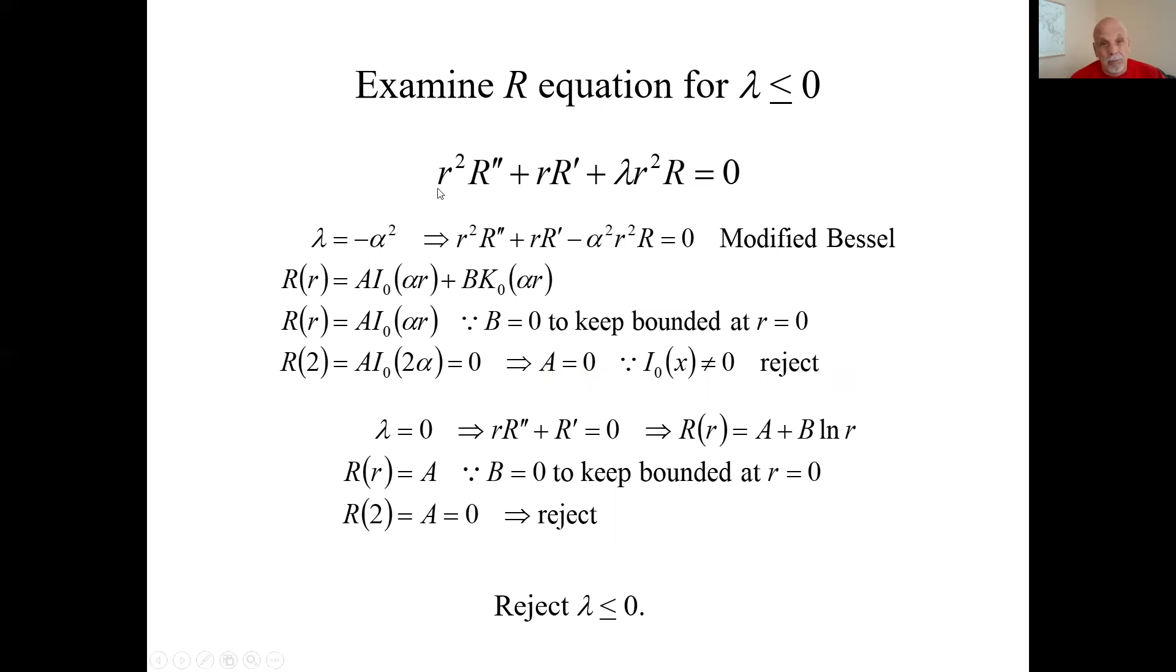What about when lambda equals zero? Then I just have this part. I can divide by r and I get this equation, which from our formula sheet has this general solution. Again, it must be bounded at r equals zero. So I'm going to set B to zero. But just r equals a constant. And r at the argument of two just equals that constant, but that has to equal zero. So again, we get a trivial solution, so we reject that. So we reject all the non-positive lambdas.